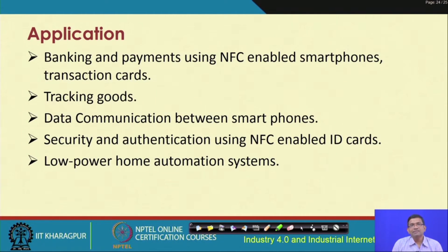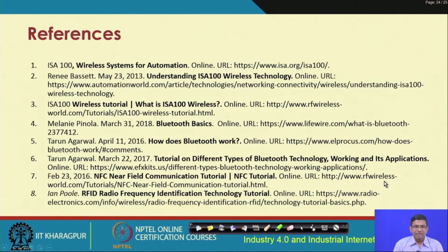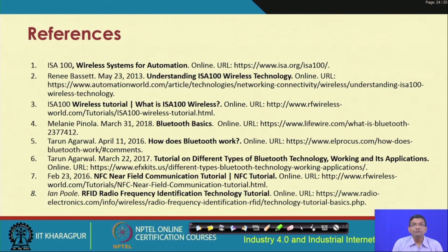Applications of NFC are very similar to RFID: tracking of goods, banking, NFC-enabled smartphones, data communication between smartphones, security and authentication, and low-power home automation systems. With this we come to an end of this lecture. We have gone through various connectivity technologies including IEEE 802.15.4, ZigBee, Z-Wave, ISA 100.11A, Bluetooth, RFID, NFC, and Wireless HART — all different wireless technologies that can be used to offer connectivity and power communication between IoT devices.